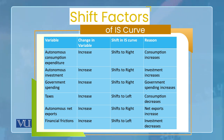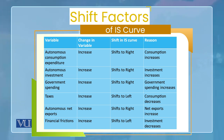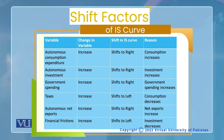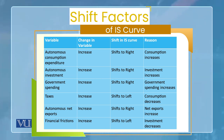If financial frictions increase, the IS curve shifts to the left. Financial friction means that hurdles are created in giving loans to businesses — due to lack of information, banks or savers are unable to lend to borrowers. When loans cannot be given, investment decreases, and when investment decreases, aggregate output and total demand also decrease.